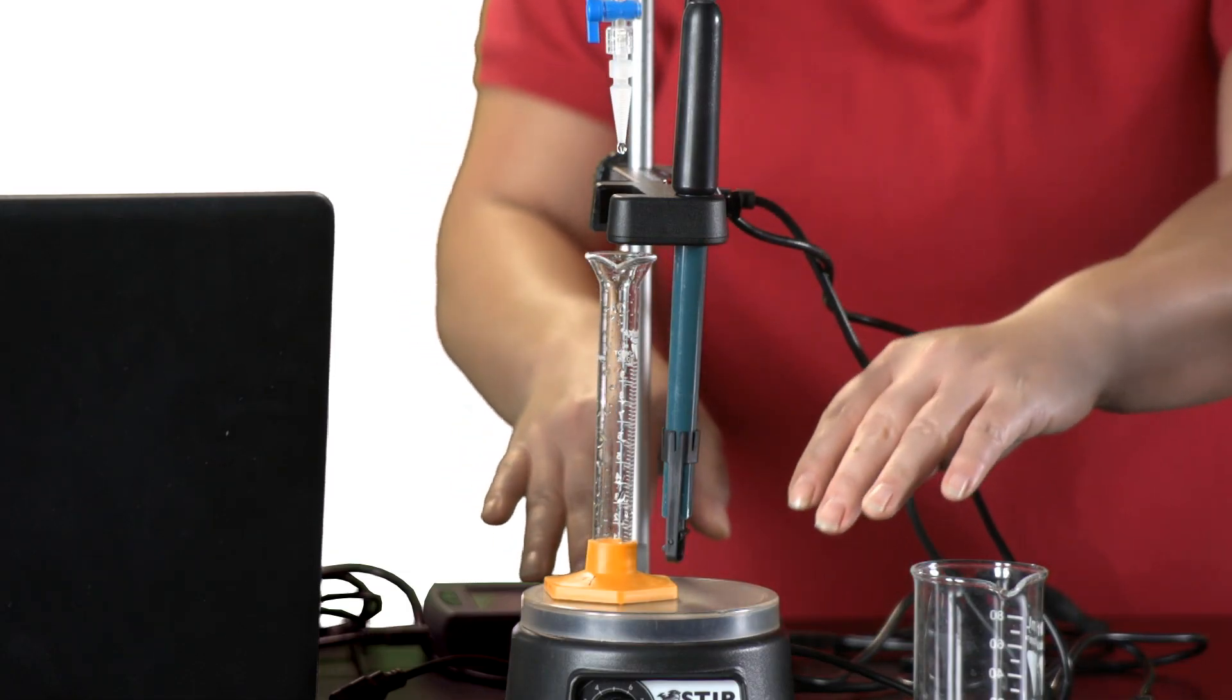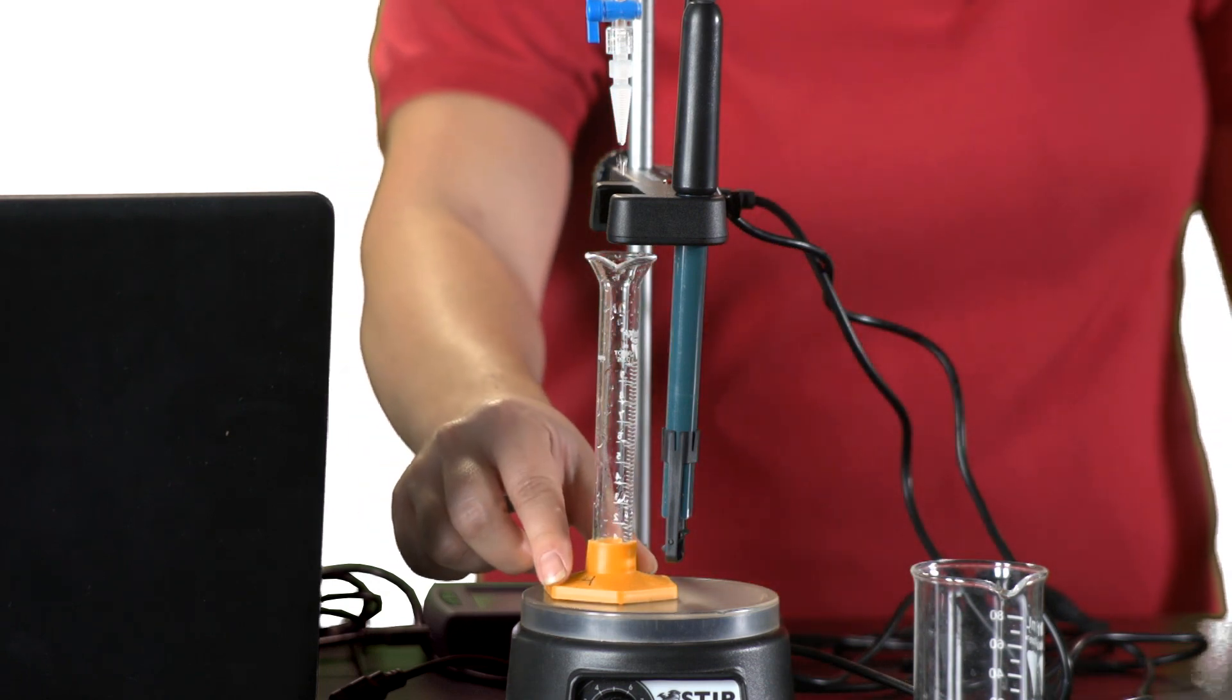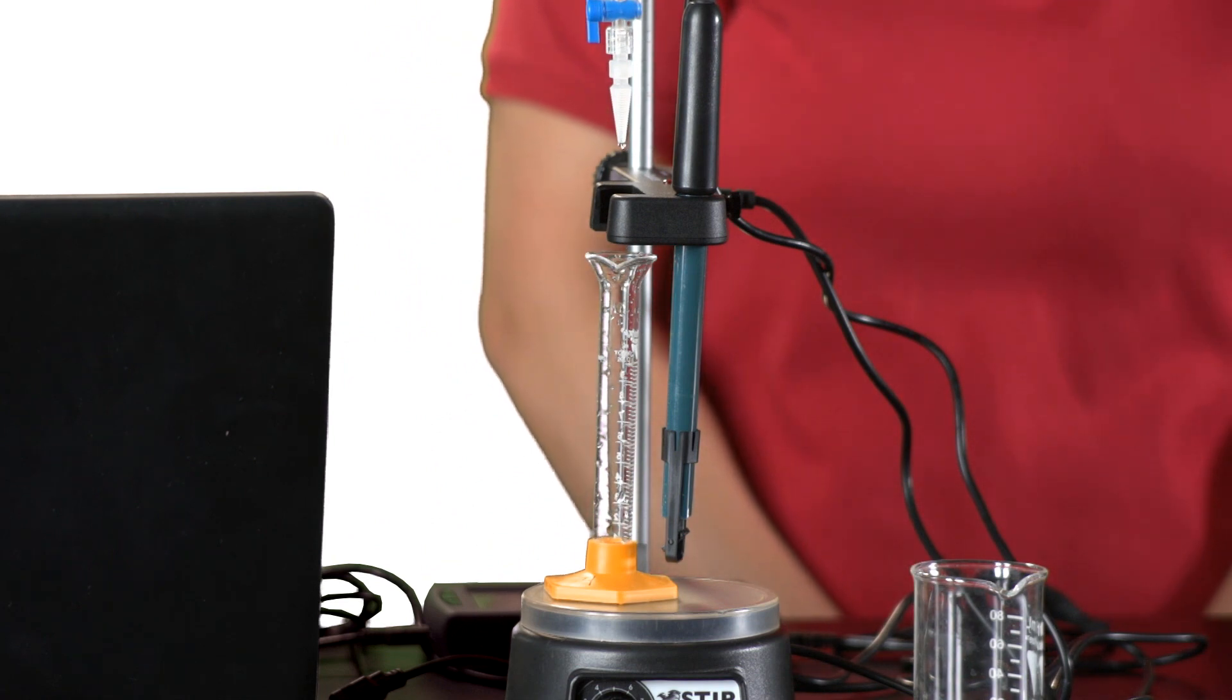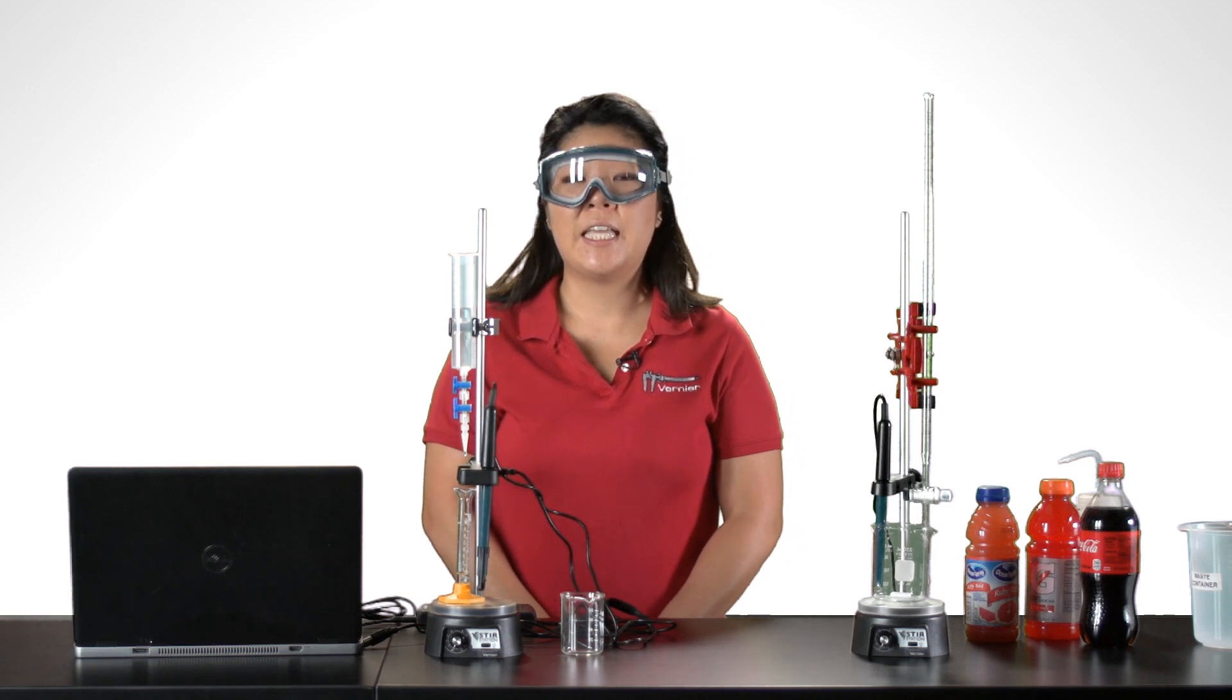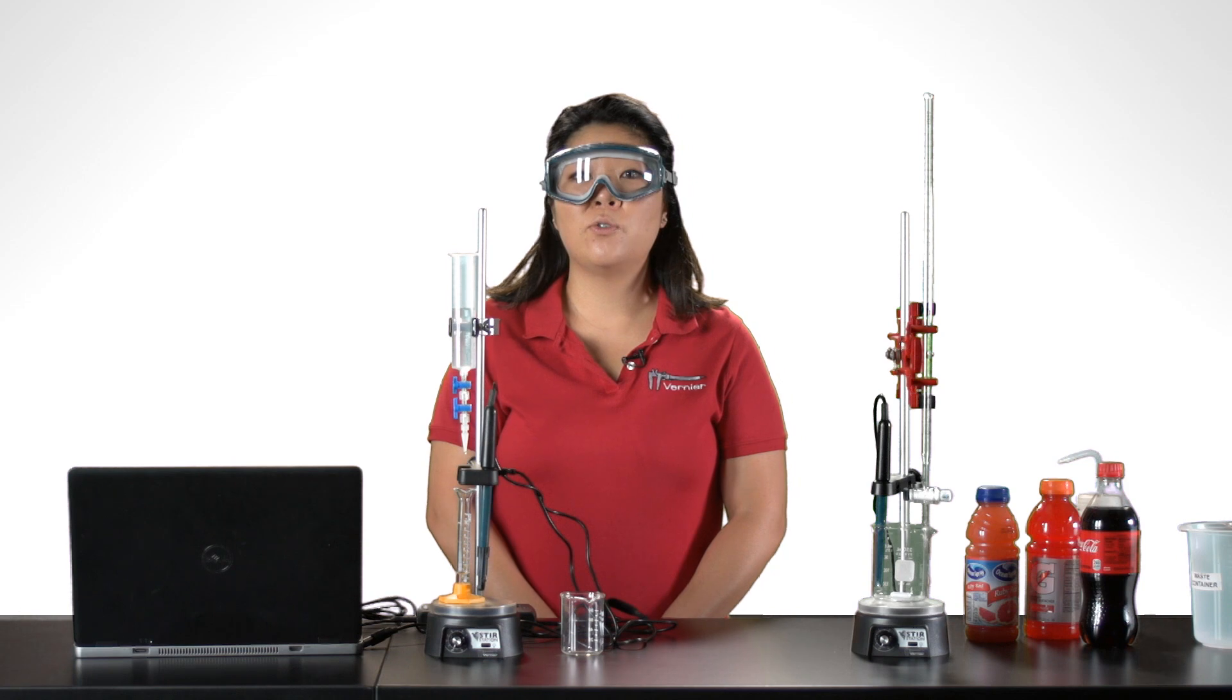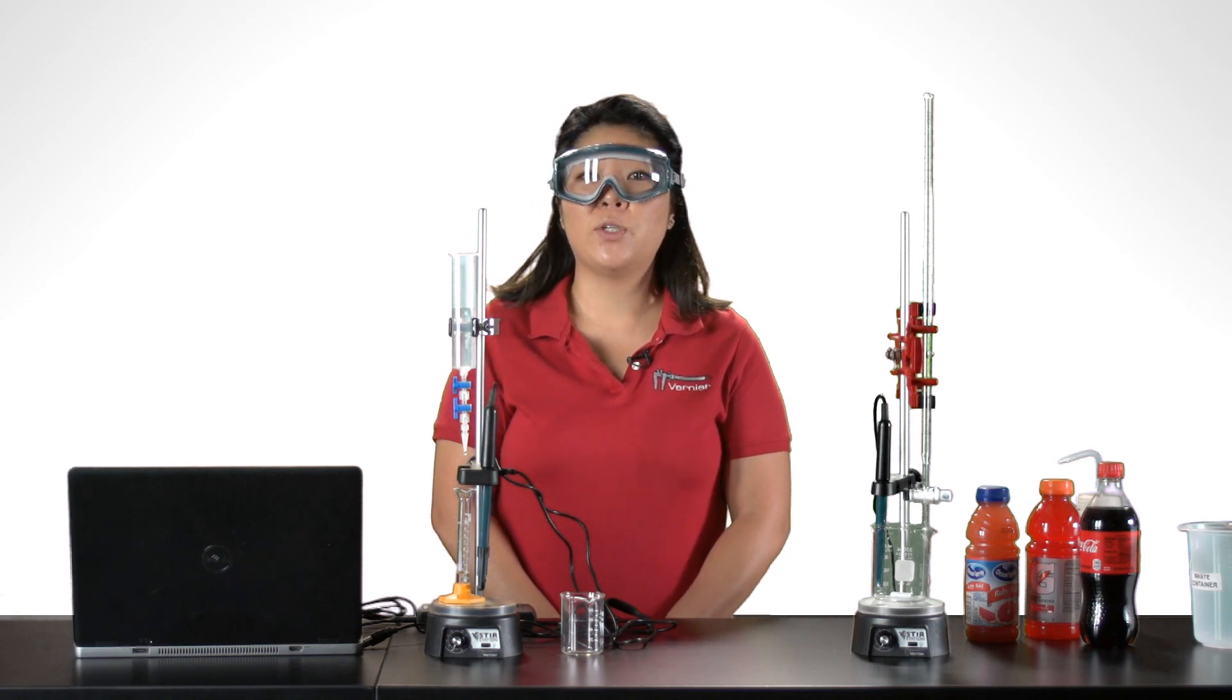So I've readjusted the setup here now to calibrate the drop counter using a 10 milliliter graduated cylinder, making sure again the drop rate is no faster than approximately one drop for every one to two seconds. The intent is to collect approximately nine to 10 milliliters of liquid in the graduated cylinder, and the software calculates the drops per milliliter based on the number of drops counted and the manually entered volume.